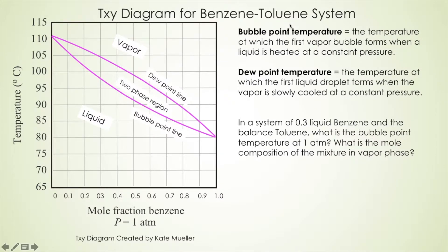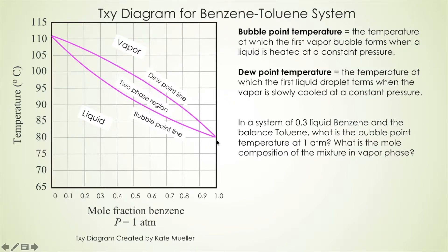Let's look at the Txy diagram for the benzene-toluene system. Comparing benzene with toluene, benzene is the more volatile species, so we put the more volatile species' mole fraction on the x-axis. On the y-axis there's temperature in degrees Celsius, scaled from 65 to 115. From this diagram we can find the boiling points of both species. Since benzene is more volatile its boiling point is lower, and we can read it at the lower end — the boiling point of benzene is about 80.1 degrees Celsius.